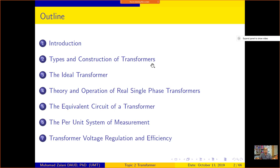In subtopic 2.2, we will discuss the types and construction of the transformer. There are two types: core type and shell type. We'll look at how their winding configurations differ. We will also discuss how we name different transformer types based on their application.